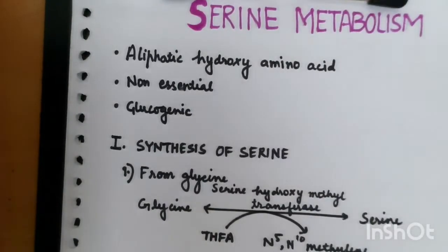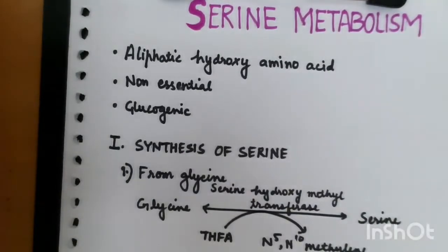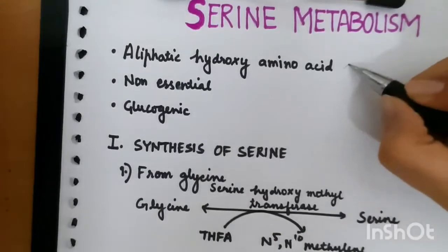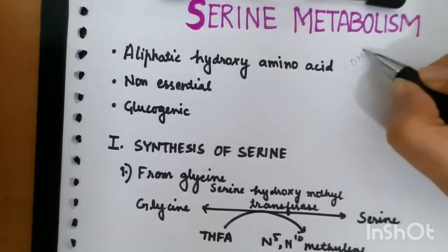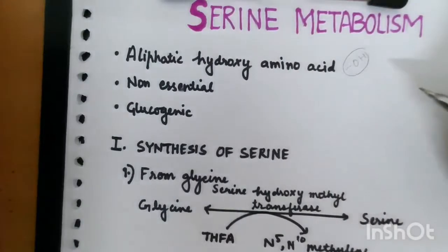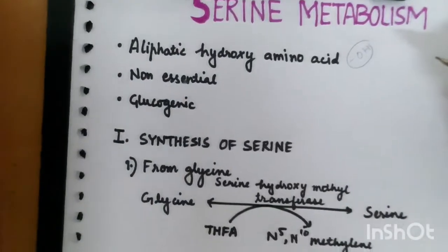Hello guys, today in protein metabolism we will study serine. It is an aliphatic hydroxy amino acid, meaning it has an OH group attached to it. It is non-essential and glucogenic in nature.